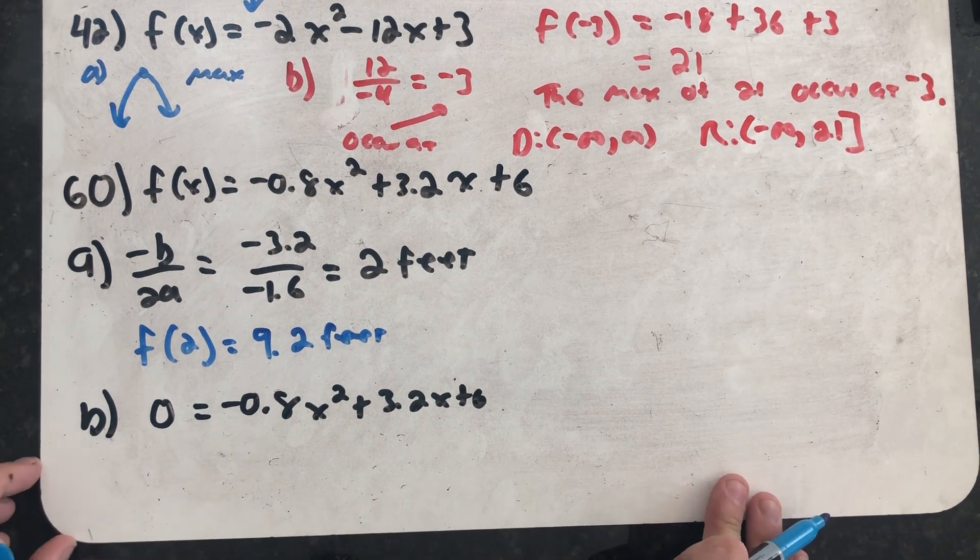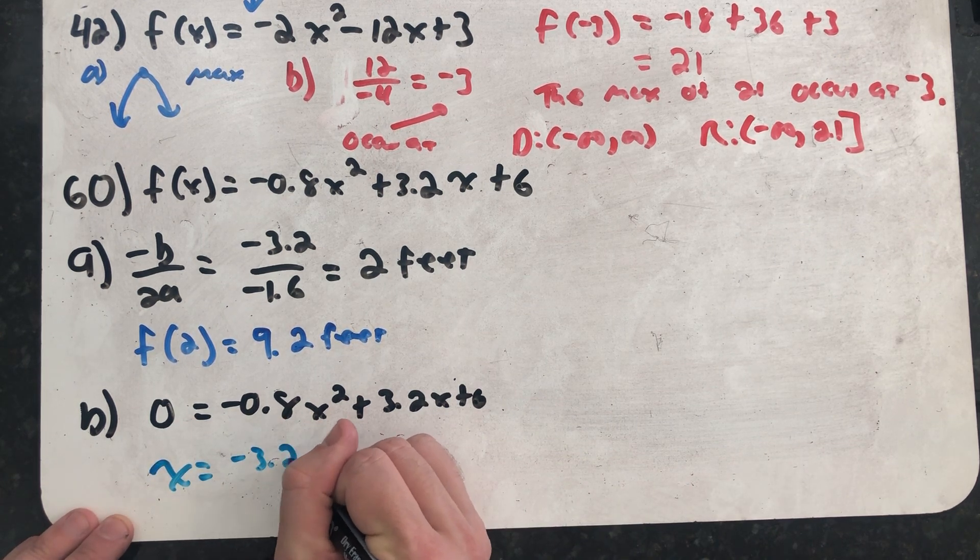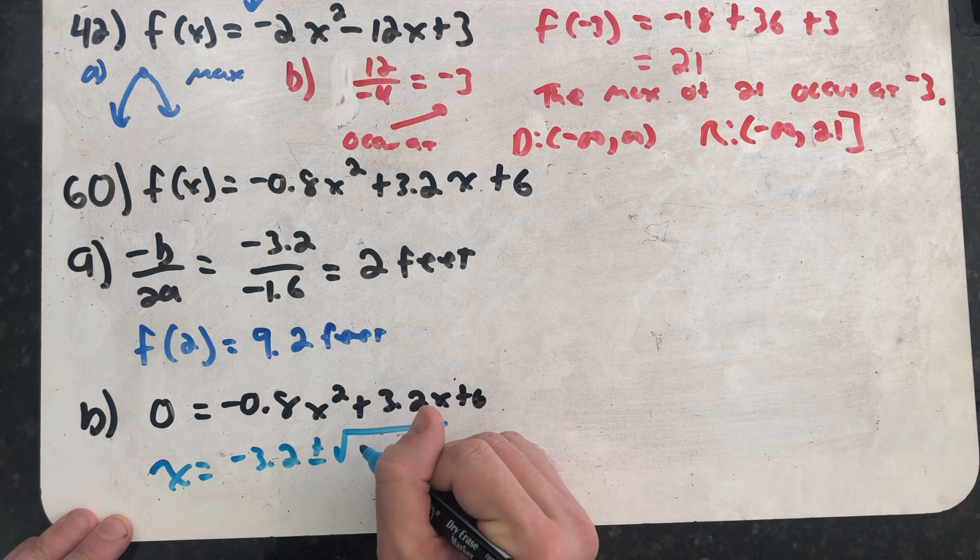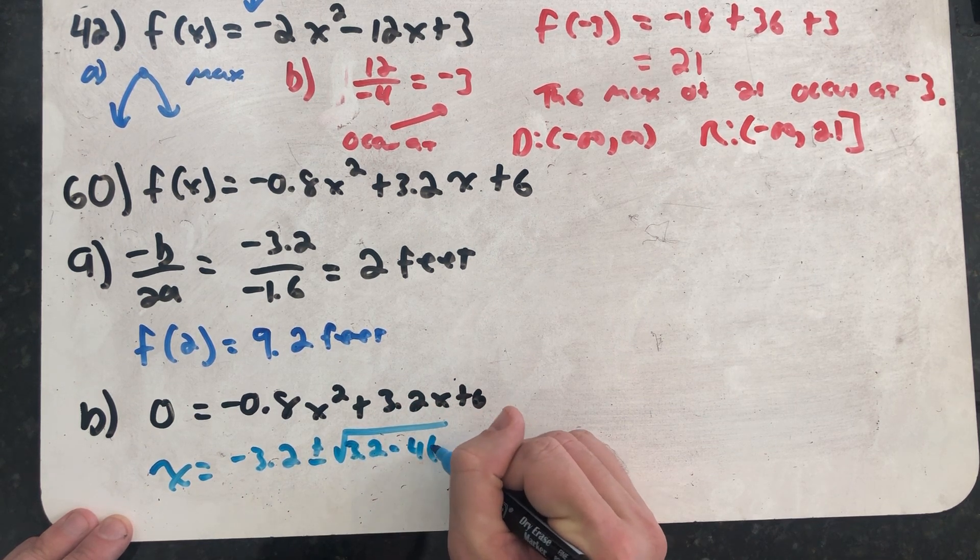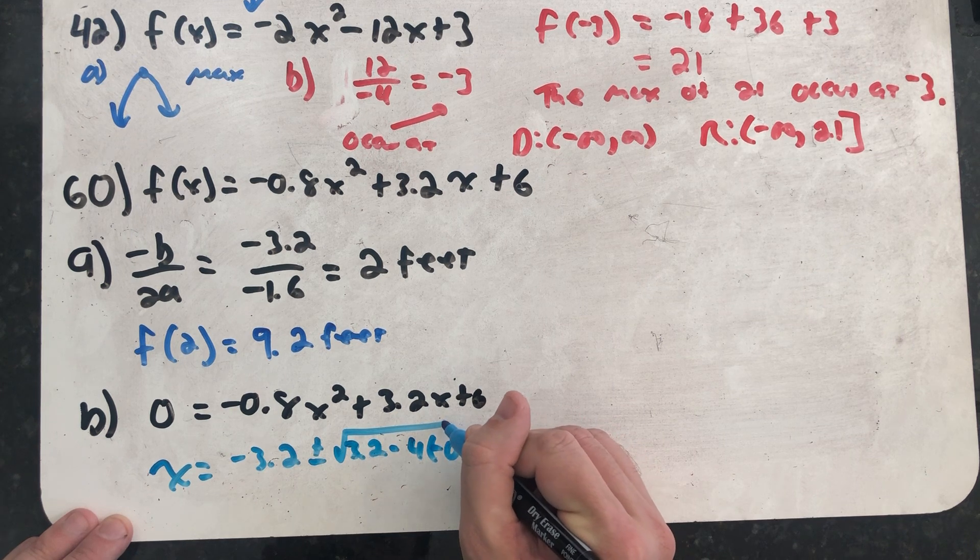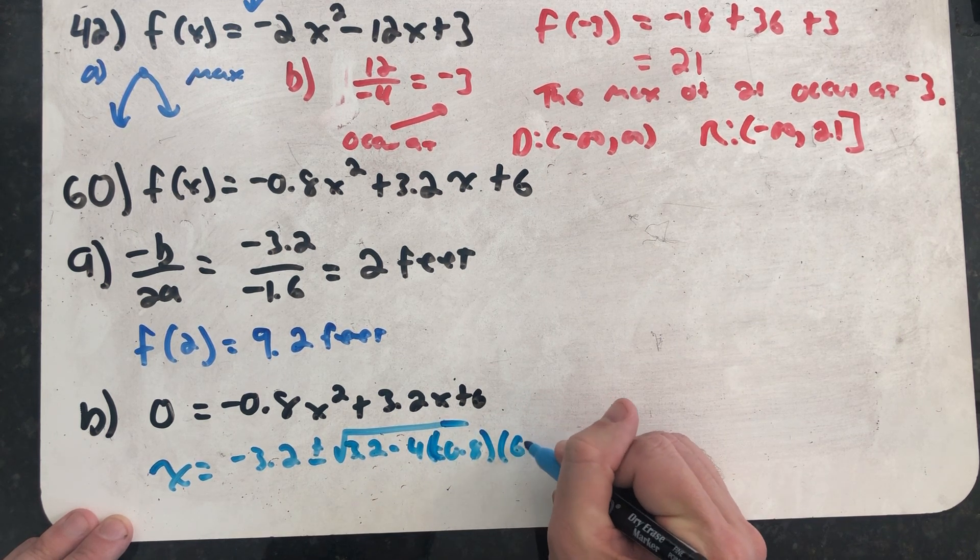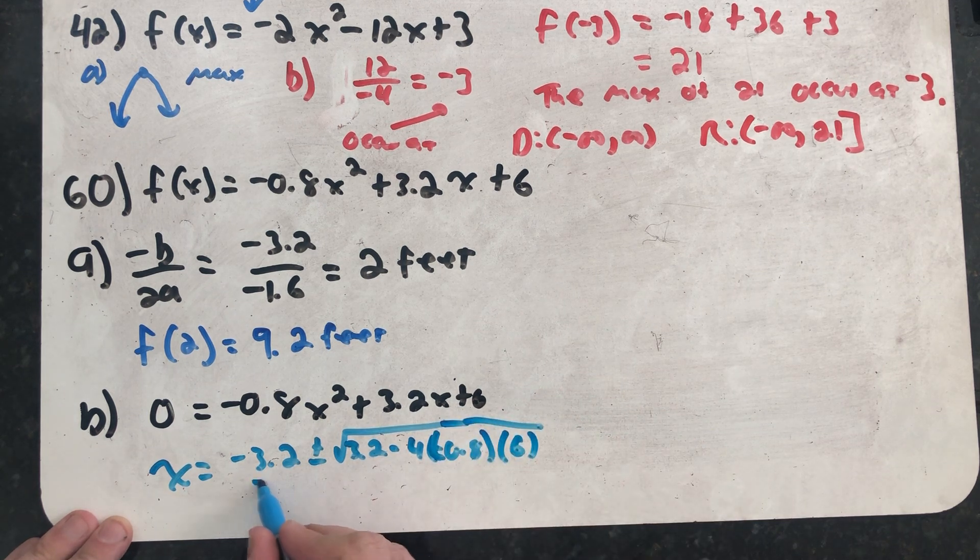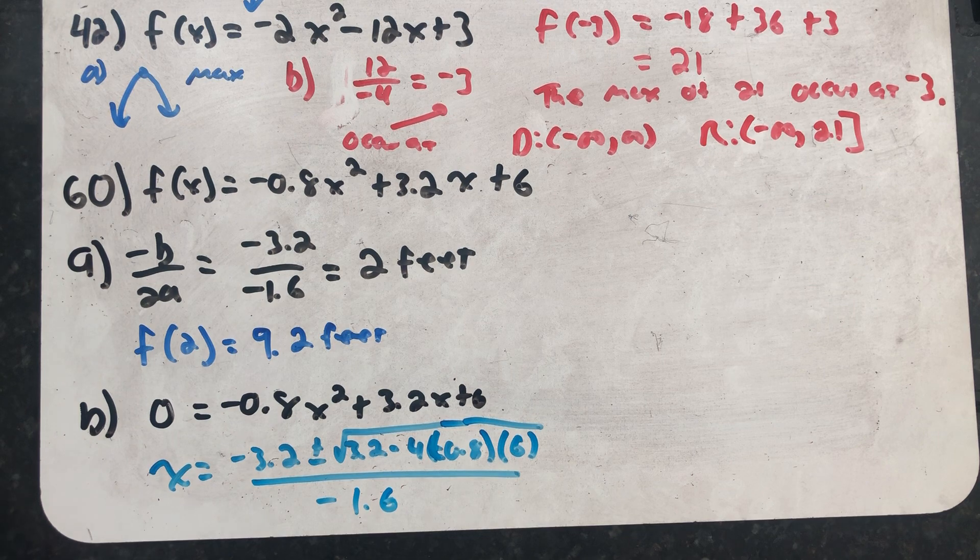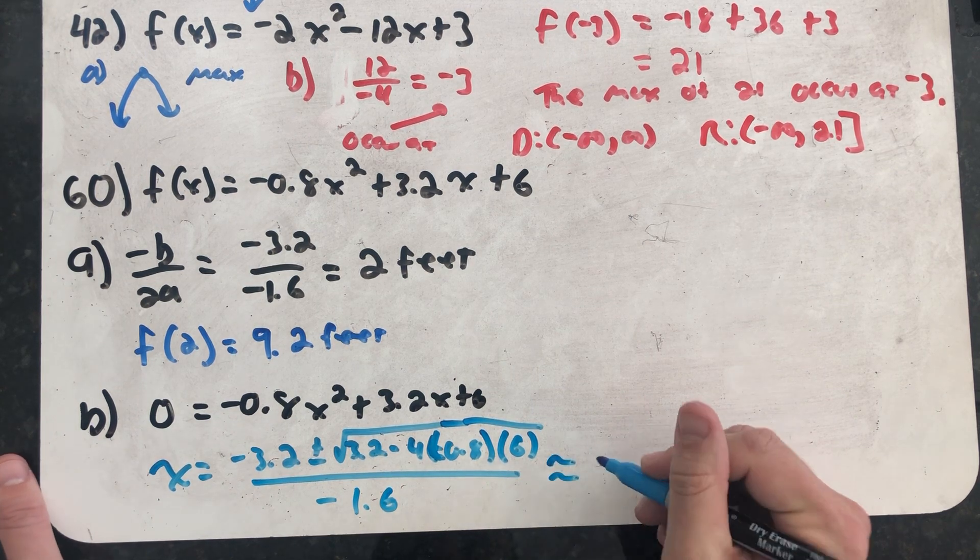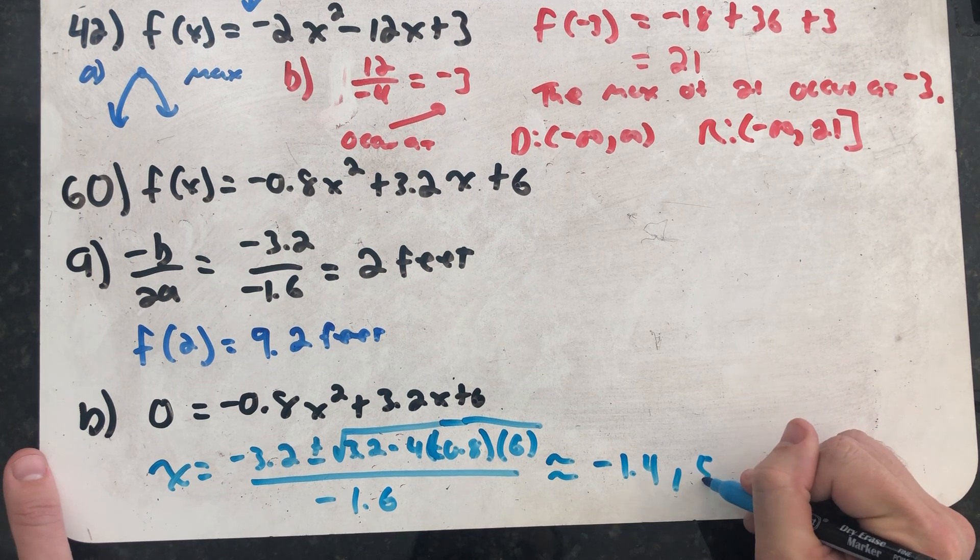I'll proceed by using the quadratic formula: opposite of B plus or minus the square root of B squared minus 4 times A times C, all over 2A. Carefully typing this into your calculator will give you two possible solutions: minus 1.4 feet and positive 5.4 feet.